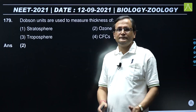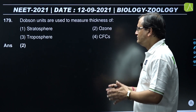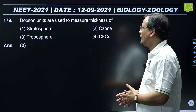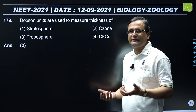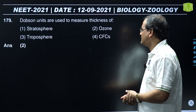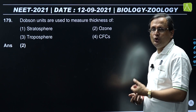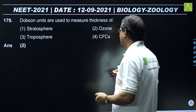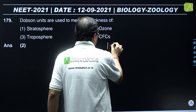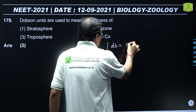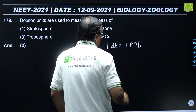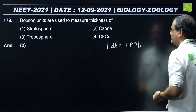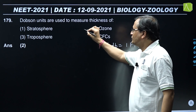Question 179: Dobson units are used to measure the thickness of what? The answer is ozone. Ozone is measured in Dobson units. 1 Dobson unit equals 1 PPB (1 part per billion). So the correct answer is option 2.